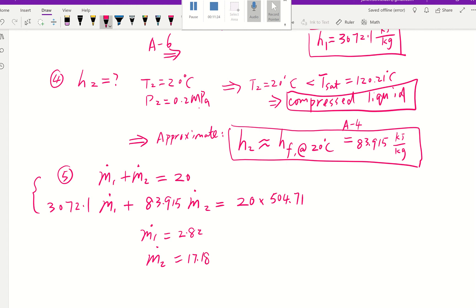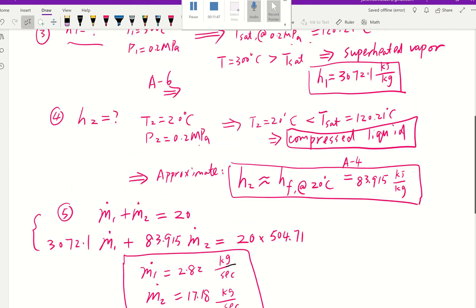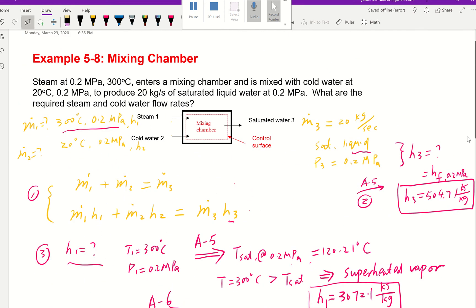That's going to be our answer with mass flow rate units, which is kilograms per second. So that's the end of this mixing chamber example and I hope you enjoyed it. I'll see you next time. Bye!